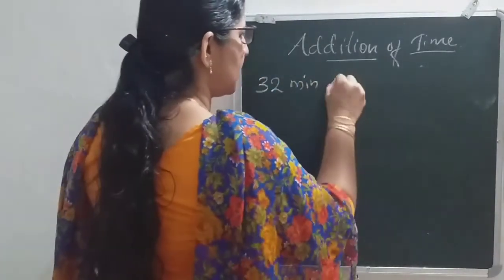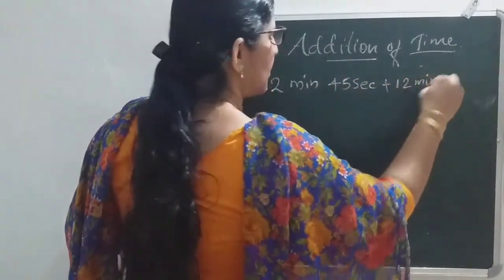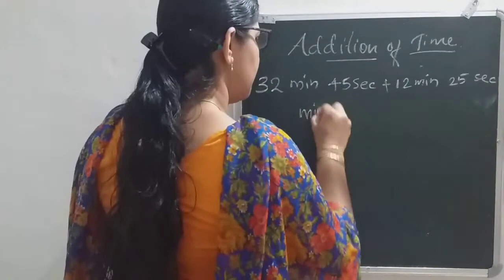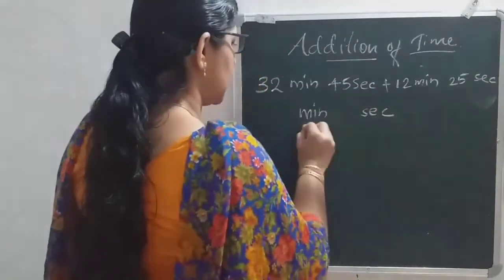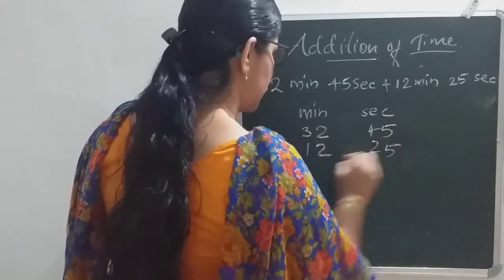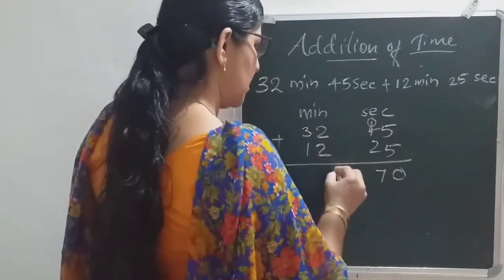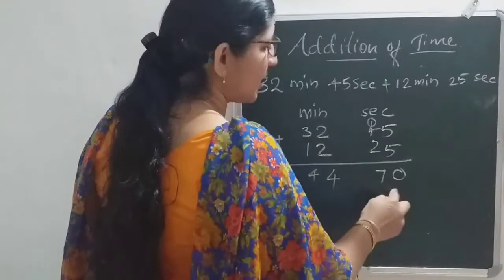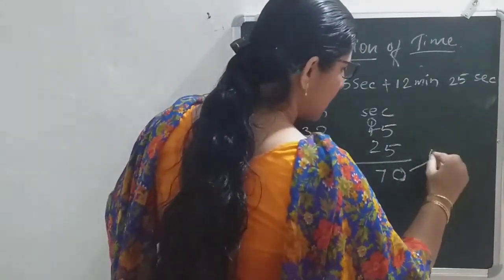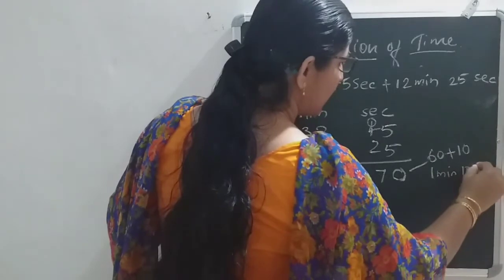Last one more example: 32 minutes 45 seconds plus 12 minutes 25 seconds. 5 plus 5 is 10, carry 1; 4 plus 2 plus 1 is 7 in the tens place of seconds; 2 plus 1 is 3 in tens of minutes; 3 plus 1 is 4 in tens of minutes. So we get 44 minutes 70 seconds. 70 seconds means 60 plus 10 — that is 1 minute and 10 seconds.